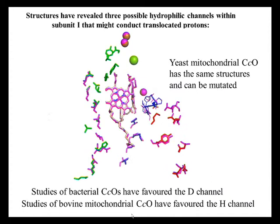Since we know that proton translocation occurs in the central subunit one, which is common to all of them, we've looked at these structures to try to find hydrophilic channels which might help conduct the protons through the structure. Because when protons have to be moved through proteins, you need hydrophilic channels. When we look at these structures, it's well known that there are three possible hydrophilic channels — labelled the D channel, the K channel, and the H channel — and all of these are in subunit one in all of these enzymes.